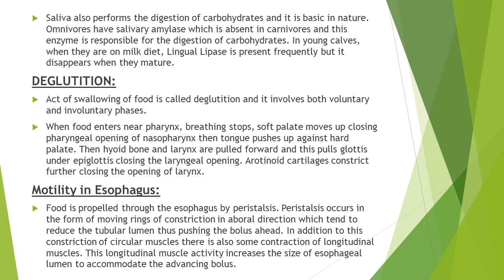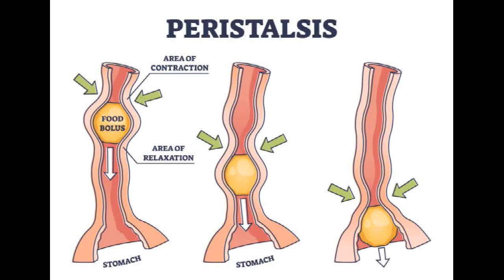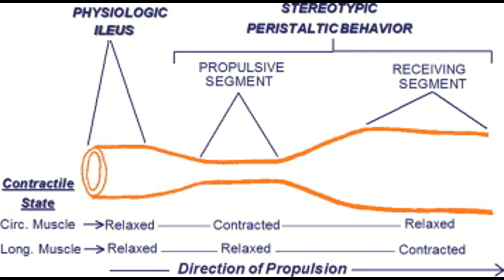Once food is in the esophagus, it is transferred to the stomach by peristalsis. Peristalsis occurs in the form of moving rings of constriction that move aborally, in a direction away from the oral cavity. In addition to this constriction of circular muscles, there is also contraction of longitudinal muscles. The moving rings of constriction reduce the tubular lumen and push the bolus ahead, while contraction of longitudinal muscles increases the size of the esophageal lumen to accommodate the advancing bolus.